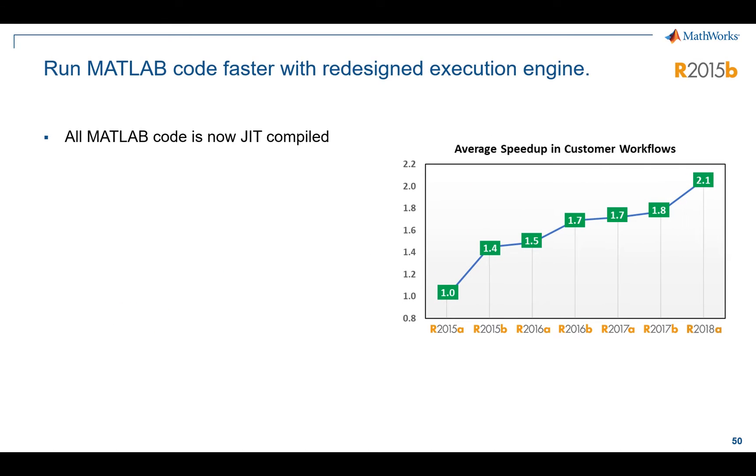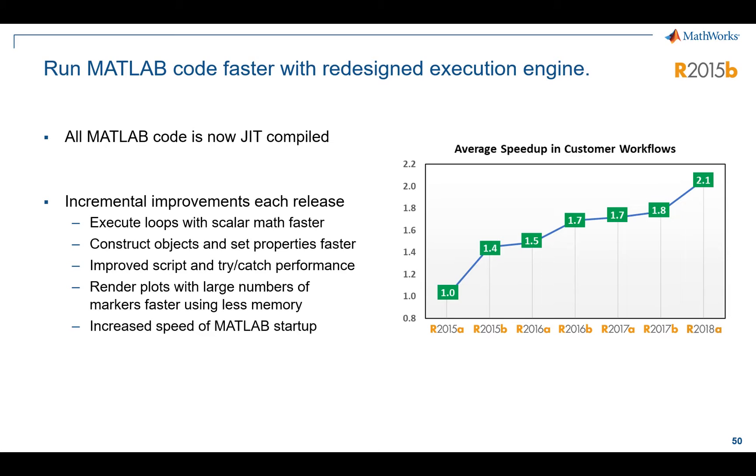Out of the box, MATLAB is about two times faster from the release in the spring of 2015 to the release in the spring of 2018. And that is because we've implemented a just-in-time compiler. So if you're using older versions of MATLAB, you'll get a pretty good speed benefit out of the box, just by using a current version.